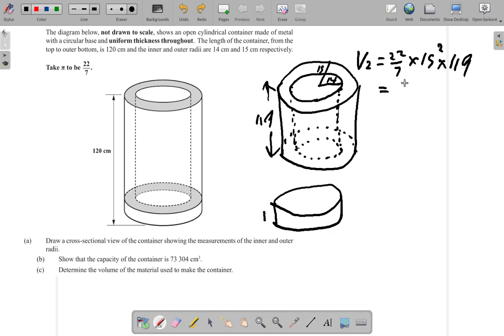Use your calculator and see what you get. 22 over 7 times 15 squared times 119 equal what did you get? I got 84,150 cm cube. Alright, that's the volume of everything.